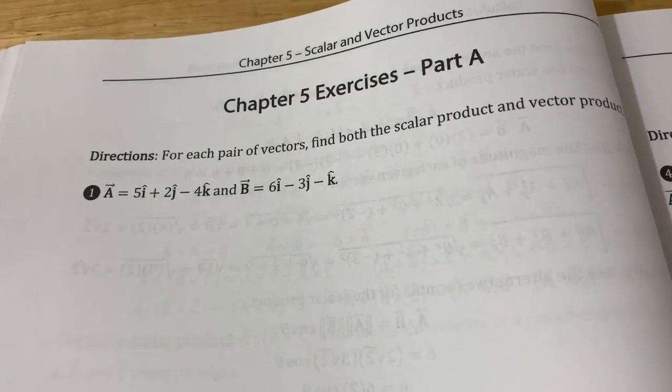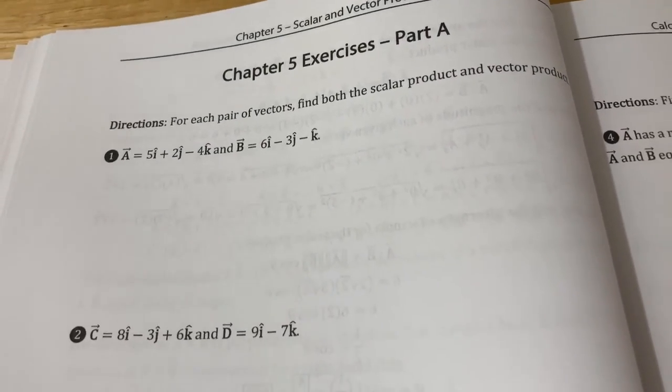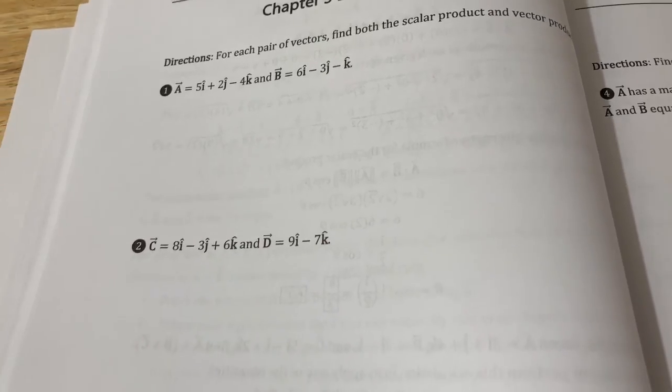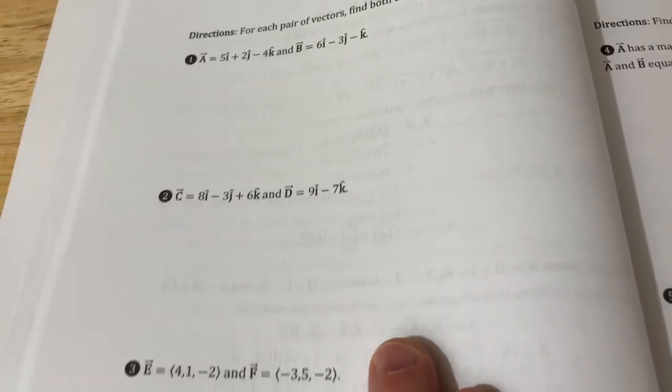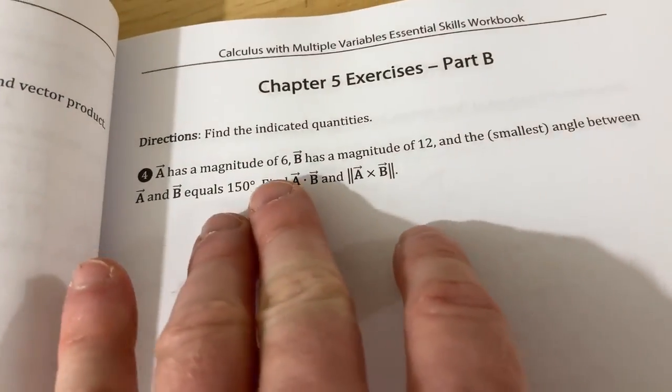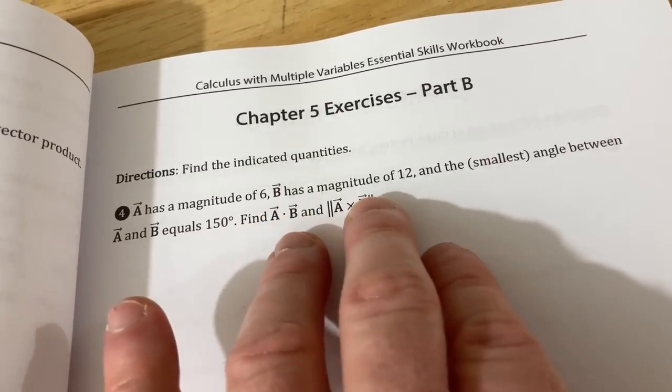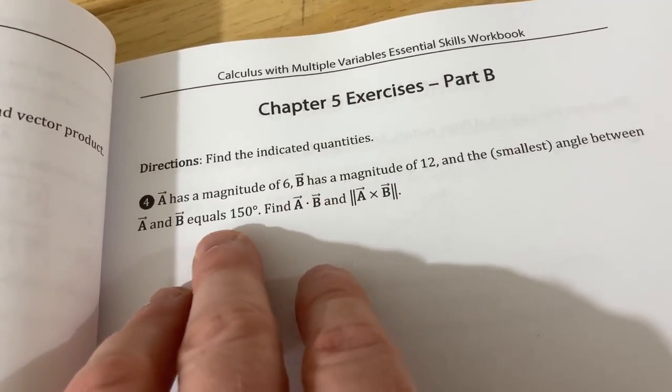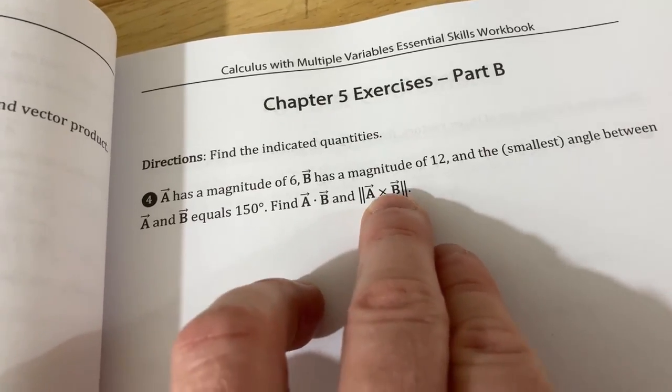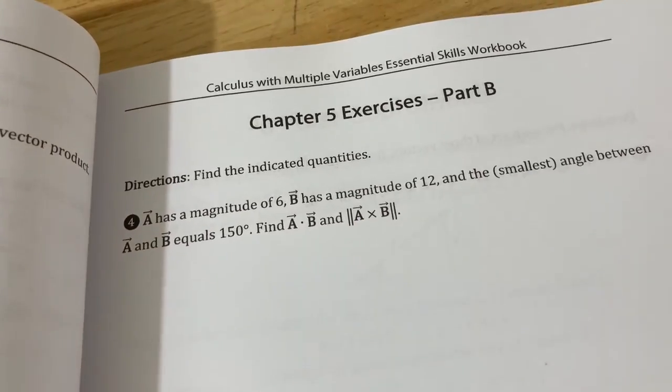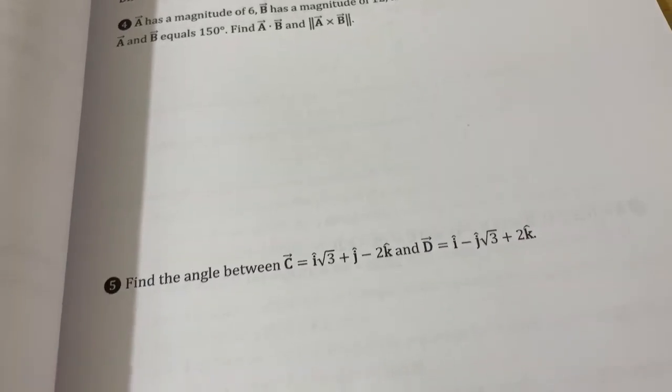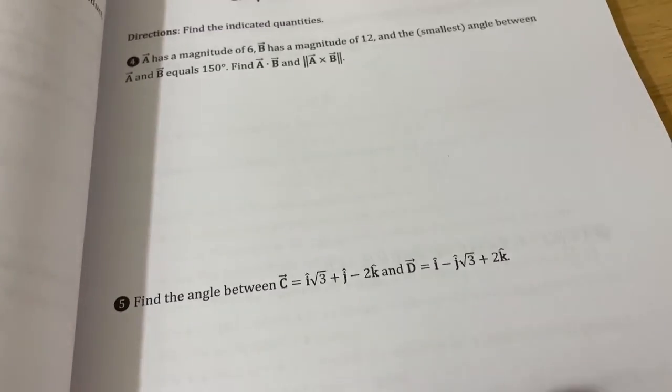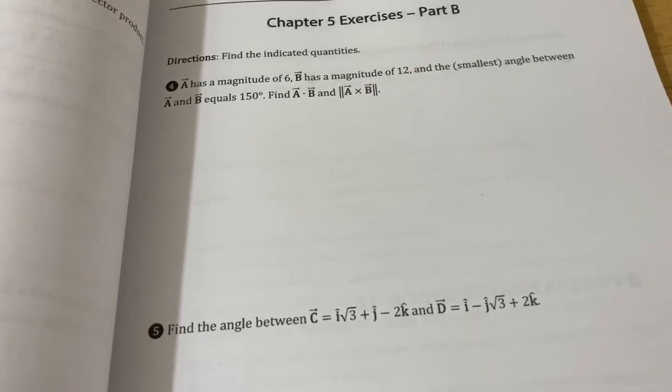There is more variety than you think in this book. If you just look at the table of contents, you might be a little bit misled because he has different types of problems. For example, here, you have to find the scalar and the vector product of vectors. Then over here, there's different types of problems. You're given the magnitude of two vectors and the smallest angle between them, and you have to find the dot product and the magnitude of the cross product. Here you have to find the angle between two vectors. So all of these are questions that you might see on a calculus three exam.